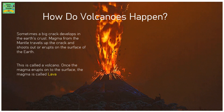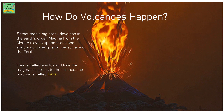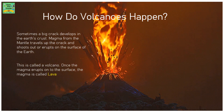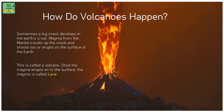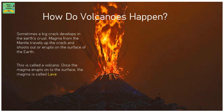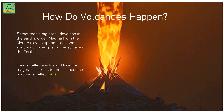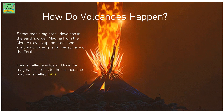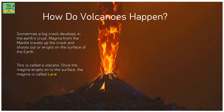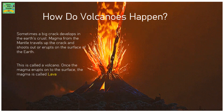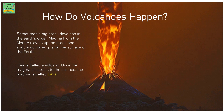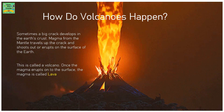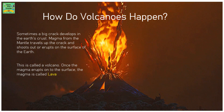How do volcanoes happen? Sometimes a big crack develops in the earth's crust. Magma from the mantle travels up the crack and shoots out, or erupts, on the surface of the earth. This is called a volcano. Once the magma erupts on the surface of the earth, the magma is called lava.